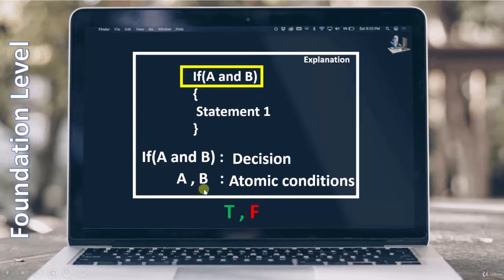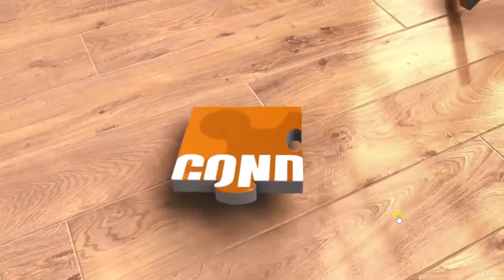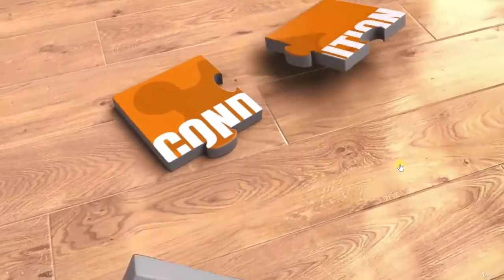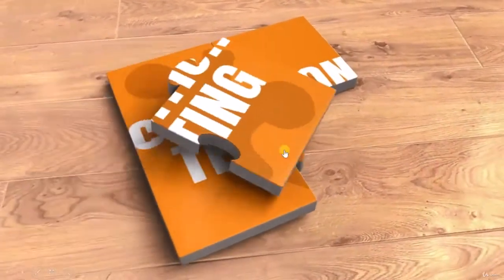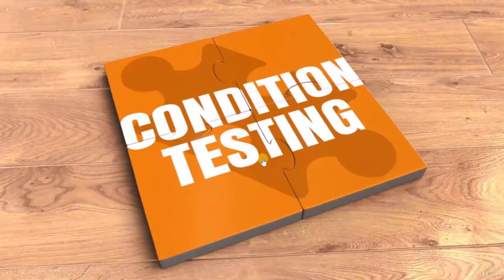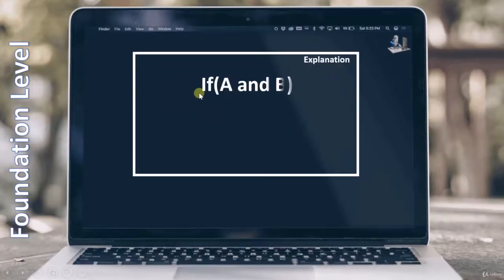Similarly, one time B has to become true and next time B has to become false. To understand condition testing, we will go to the next lecture. In this lecture we will see what condition testing is. Let's focus on the decision first — this is what we had in the previous slide: 'if A and B'.